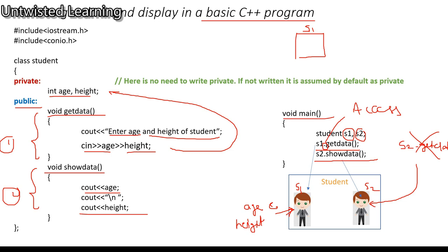Whenever you do S1.get_data, you are calling the get data function for S1 object. Suppose you enter age as 20 and height as 170 — whatever data you entered using S1.get_data will get accumulated in S1. But your S2 object is still empty. To fill values in S2, you have to call S2.get_data.